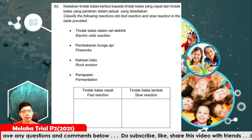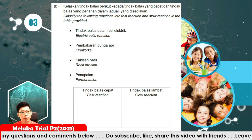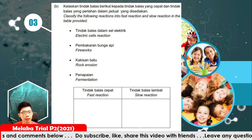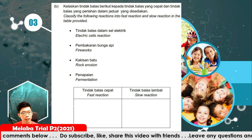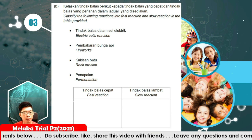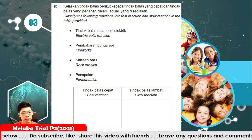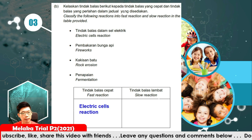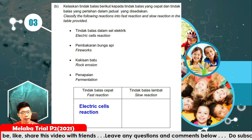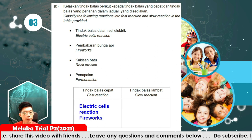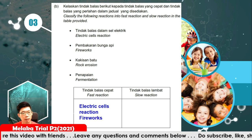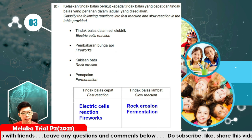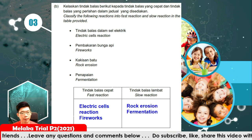Classify the following reactions into fast and slow reactions. Fast reactions: electric cell reaction and fireworks. Slow reactions: rock erosion and fermentation. These two reactions are very slow.